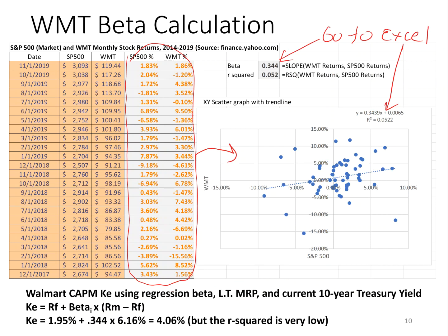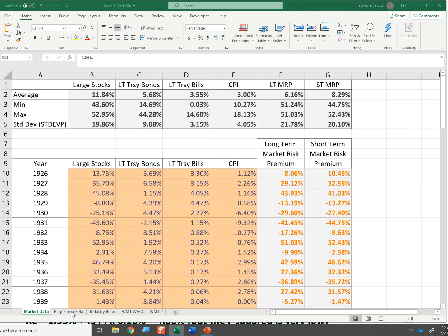I want to use data on Walmart's return and the stock market return to calculate beta ourselves, just to see how it's done. I have data from 2014 to 2019 for Walmart, with monthly returns of Walmart and monthly returns of the S&P 500. I'm going to graph the data, fit the best-fit regression line, and get the slope of that line to find the beta for Walmart from 2014 to 2019. I'll go to the data set and click on the regression beta tab.